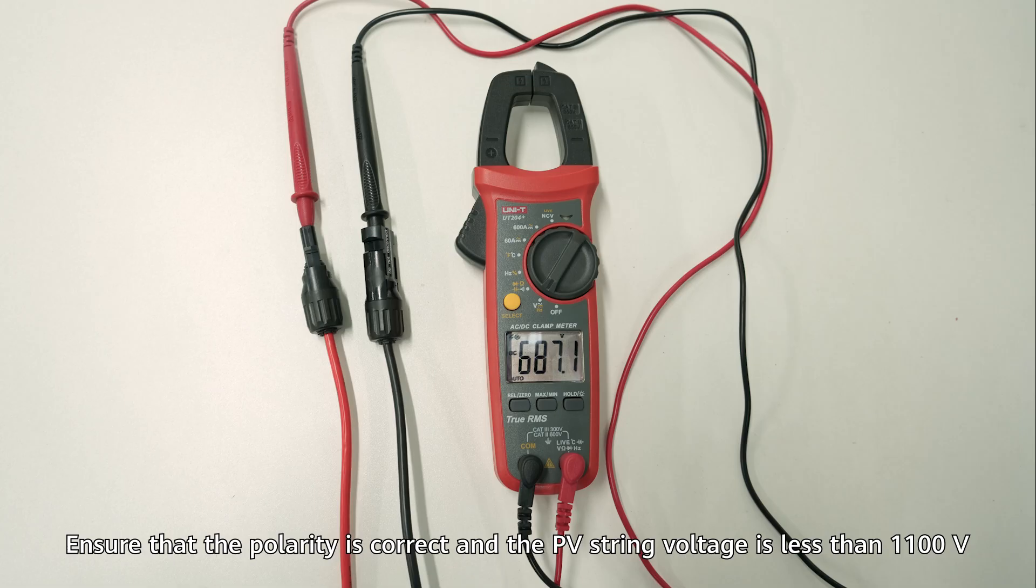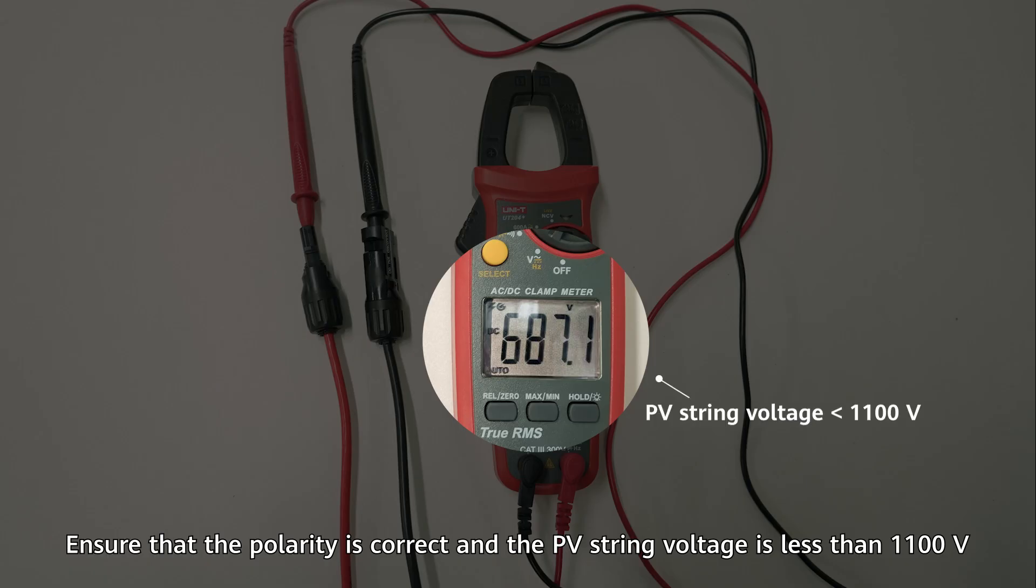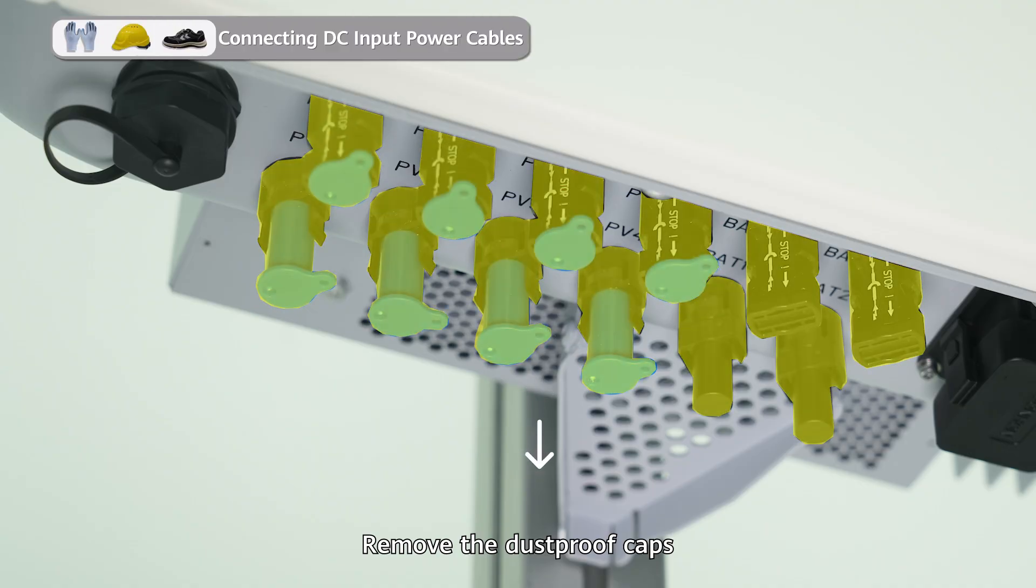Ensure that the polarity is correct and the PV string voltage is less than 1100 volts. Remove the dustproof caps.